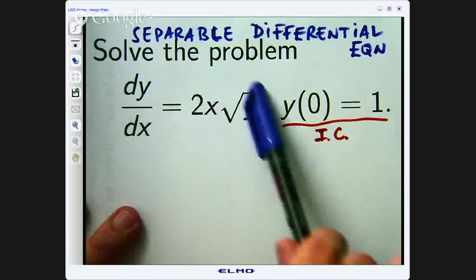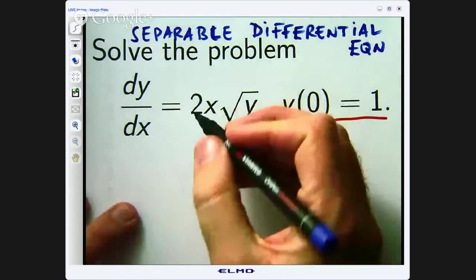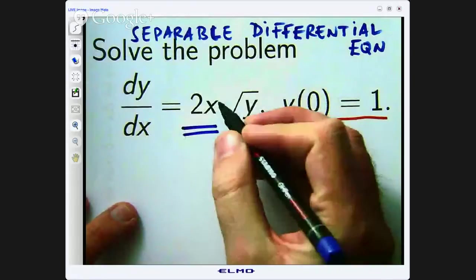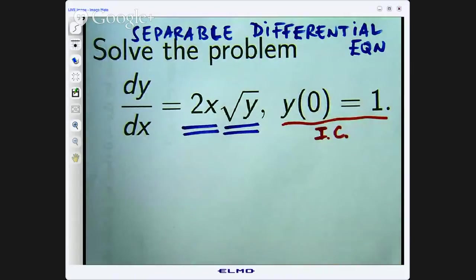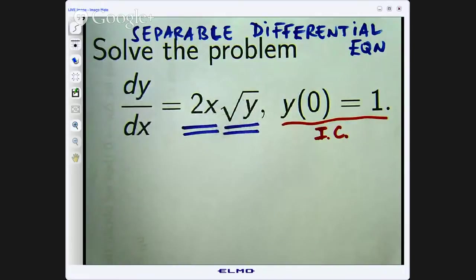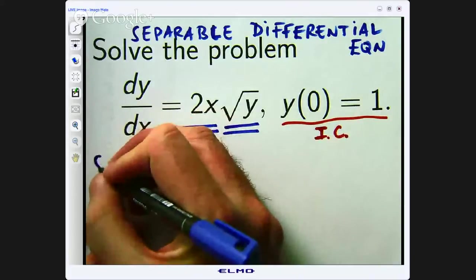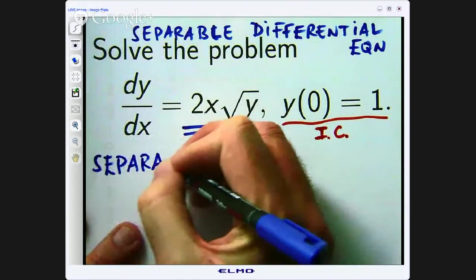Now why is this called a separable differential equation? Firstly, you will see that you have a function of one variable in this case x times a function of another variable y. This means I can separate the x's and the y's just through division or multiplication. Okay, so there are two steps for these kinds of problems. First of all we separate the variables.